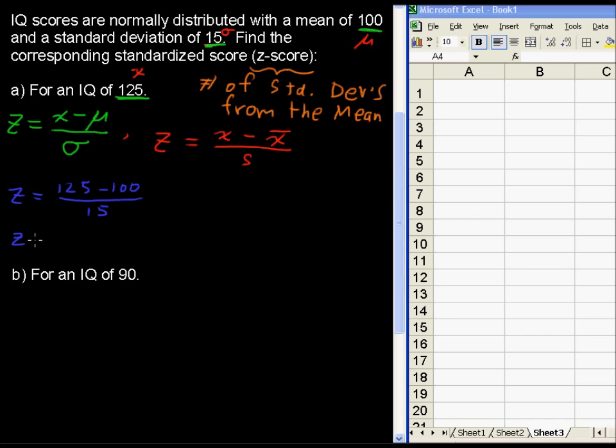So z, rounding now, the standardized score is approximately equal to 1.67. That's our answer, and that makes sense. That is positive, just to give another understanding of the standard deviation, or the standardized score is this.